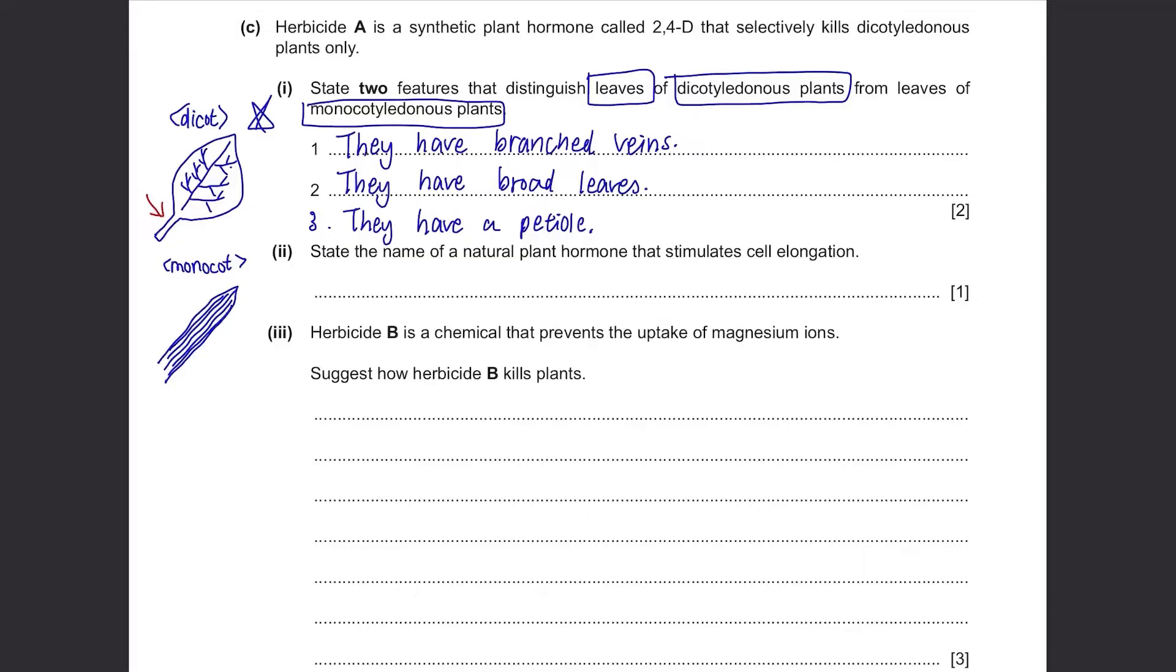State the name of a natural plant hormone that stimulates cell elongation. We usually have a whole page in our textbook dedicated on this, it's called an auxin.